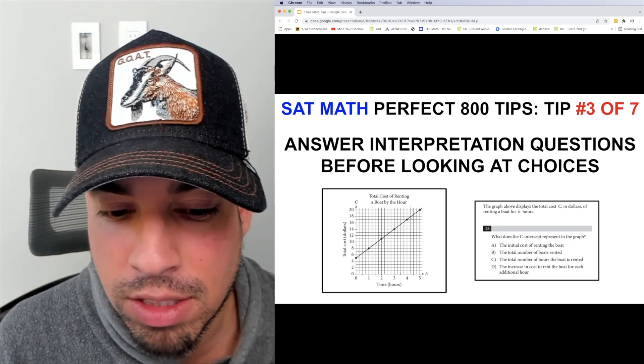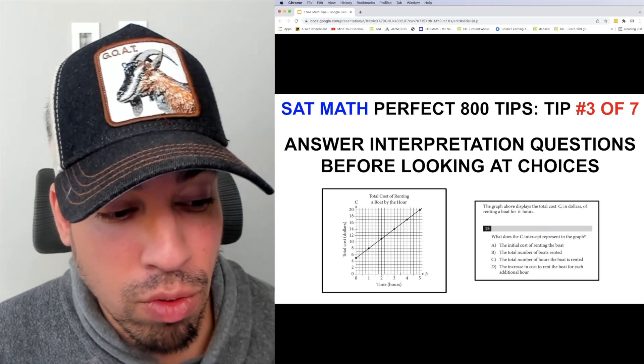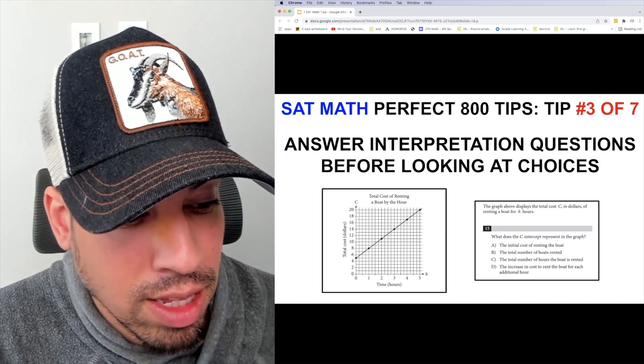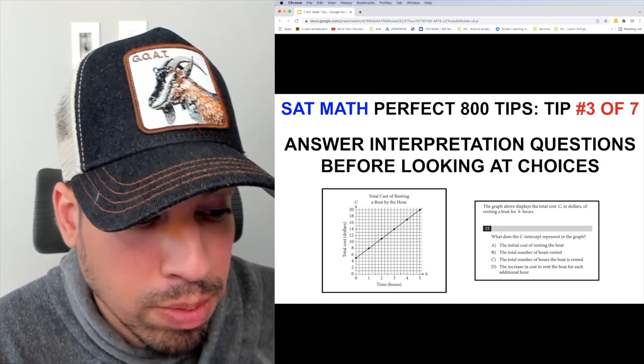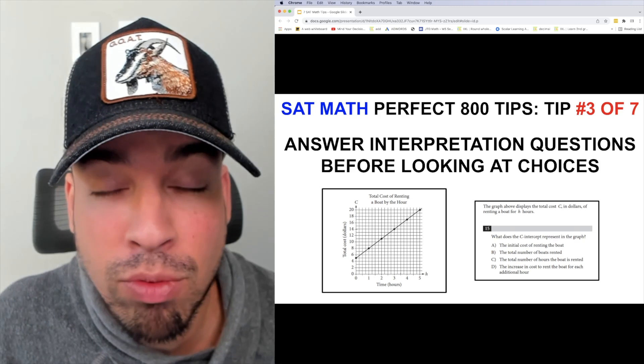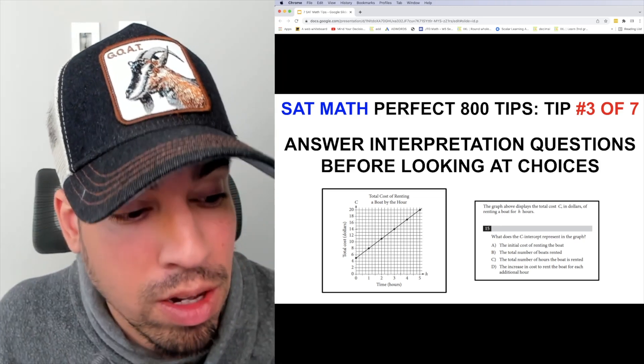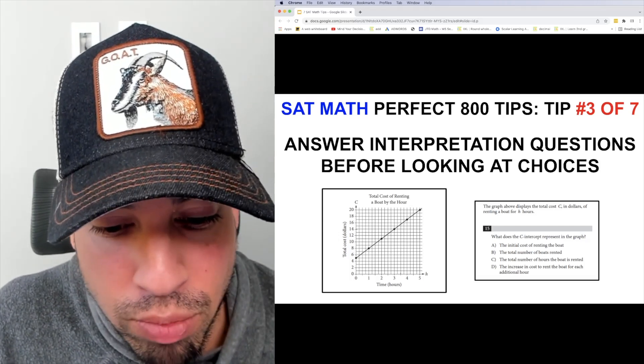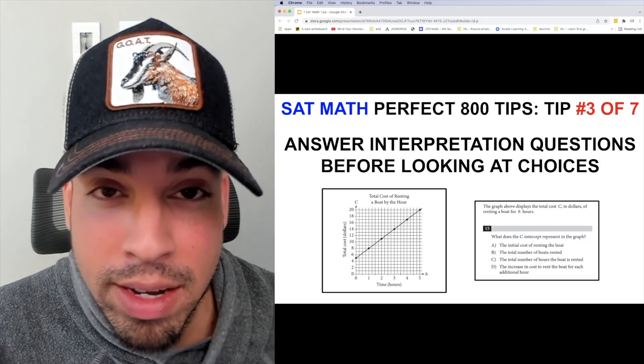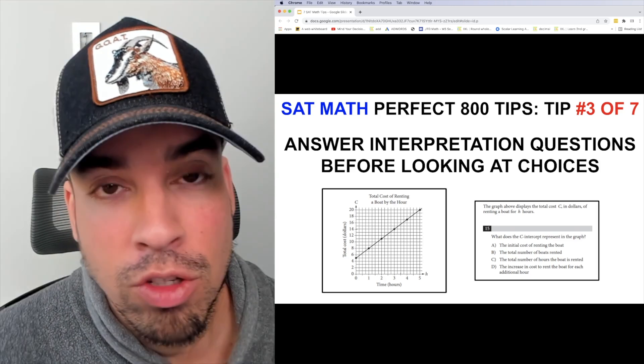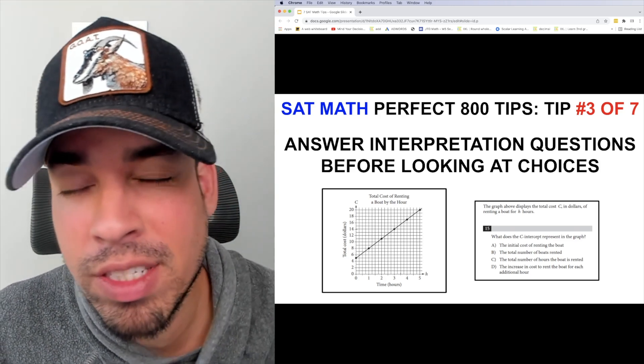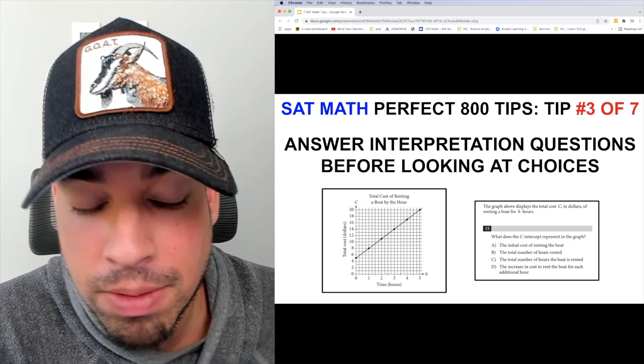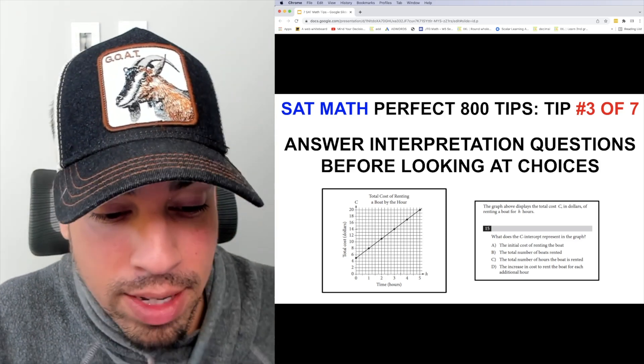Now we have an understanding of the graph and this boat rental. Because it's a linear equation, we can understand that there's probably some sort of initial cost because of that y-intercept of five and a slope of three, meaning every hour we're probably paying three dollars per hour. Now we come to the question: it says what does the c-intercept represent in the graph, and that's the same as the y-intercept. So before looking at the choices, I already know c-intercept, y-intercept, that's initial value, that's that starting cost of five dollars. And now we look at the answer choices, choice A, initial cost of renting the boat. Boom, done.